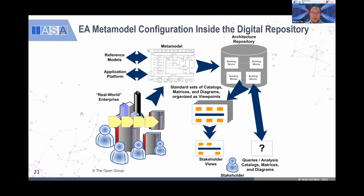Without the metamodel, we can't streamline our EA lifecycle. When we have an EA platform, we need to configure the metamodel into the platform. In layman terms, the metamodel is actually the database design — it's the entity-relationship diagram model of the enterprise. Instead of a database for CRM, it's your database for the enterprise. You look at stakeholders, your business layer — functions, departments, roles, processes — and you model them into the metamodel so that if any element changes, you know exactly what the impact is to others.